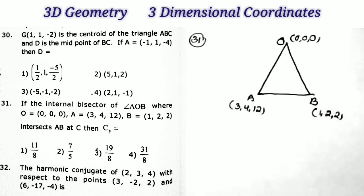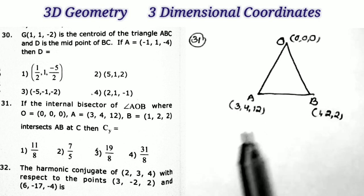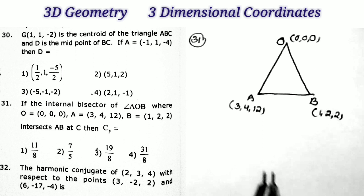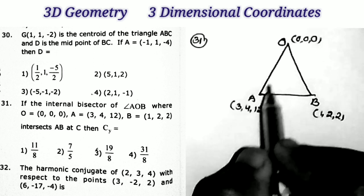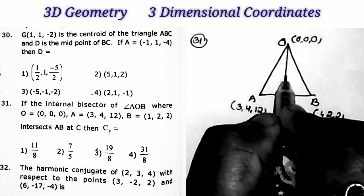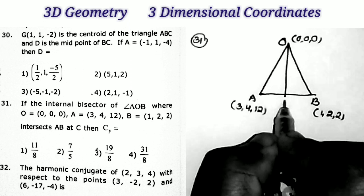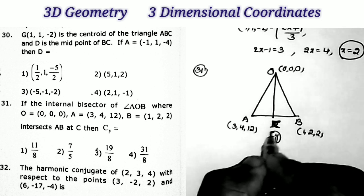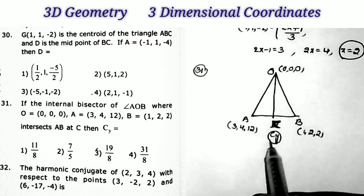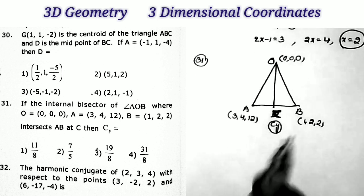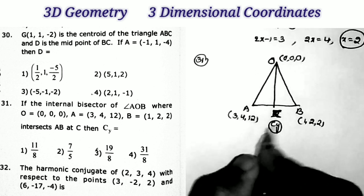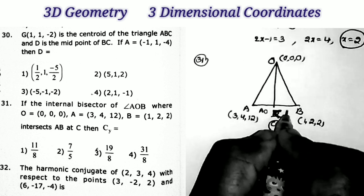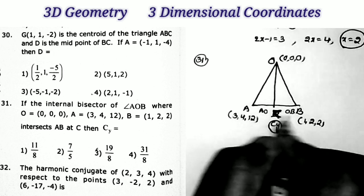Next question, sum number 31. If the internal bisector of angle AOB, where O = (0,0,0), A = (3,4,12), B = (1,2,2), intersects AB at point C, then what is CY? The internal bisector of AOB intersects the line AB at point C. We want the y-coordinate of the point C.